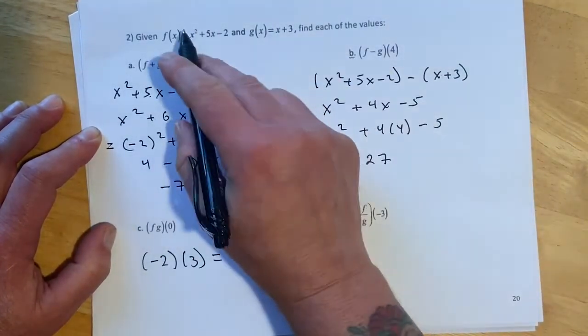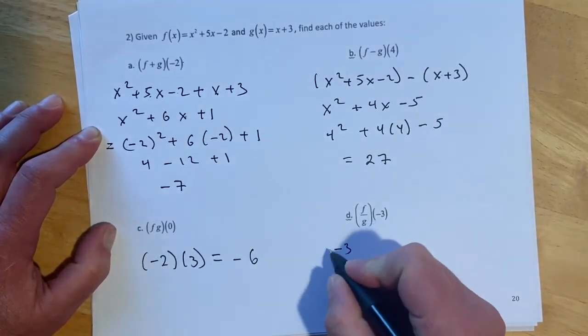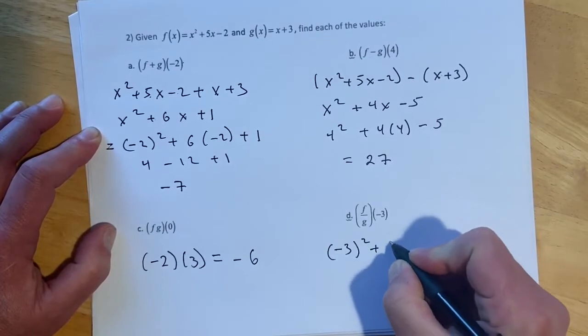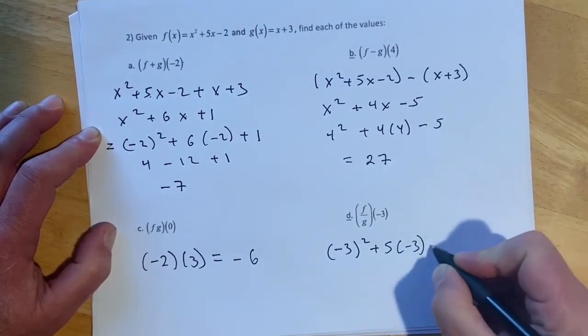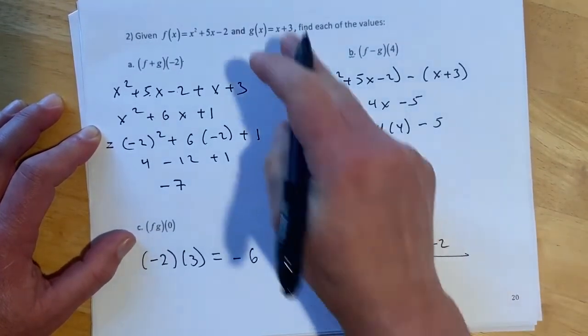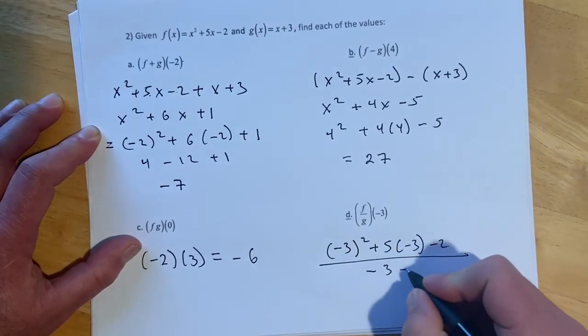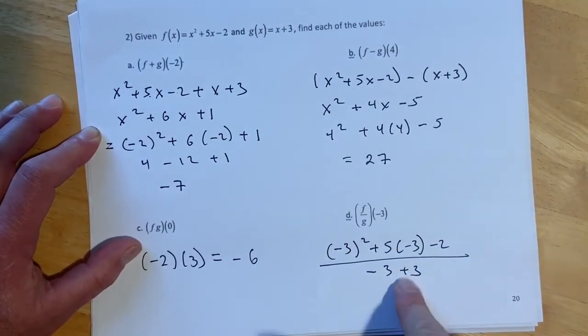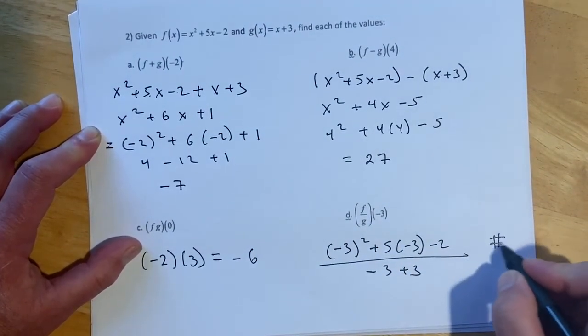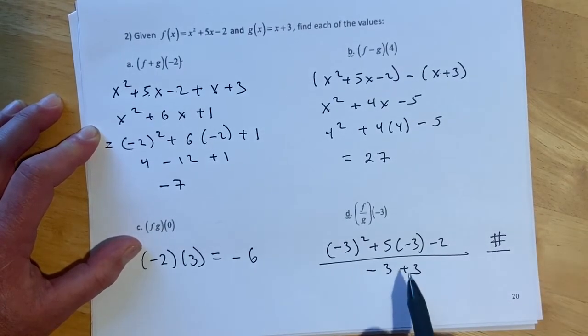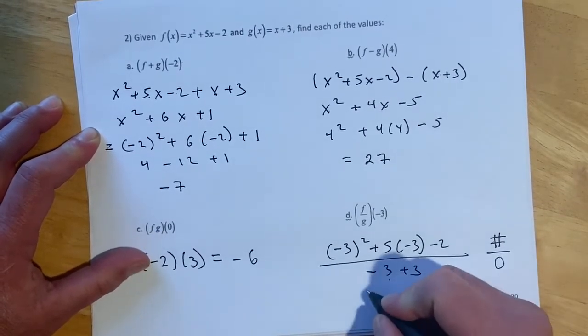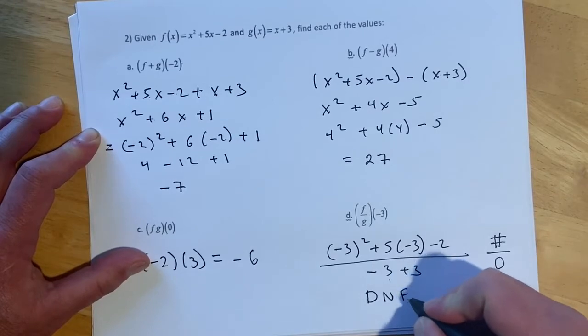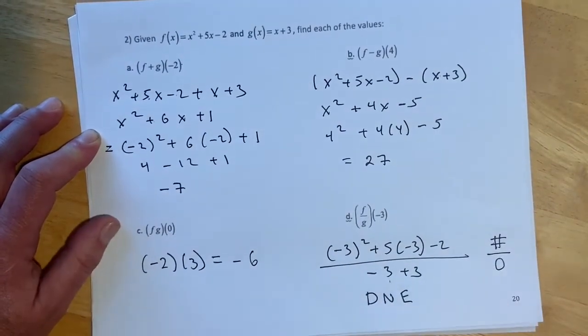And then here negative 3 plugged in will get us negative 3 squared plus 5 times negative 3 minus 2, and then over negative 3 plus 3. So this is going to make some number that I don't really care about because this makes 0. So that is does not exist or undefined because of the division by 0.